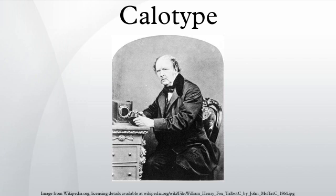The Callotype process produced a translucent original negative image from which multiple positives could be made by simple contact printing. This gave it an important advantage over the daguerreotype process, which produced an opaque original positive that could only be duplicated by copying it with a camera. Although Callotype paper could be used for positive prints, Talbot's earlier silver chloride paper — commonly called salted paper — was normally used for that purpose, as it was simpler, less expensive, and considered more attractive in appearance.